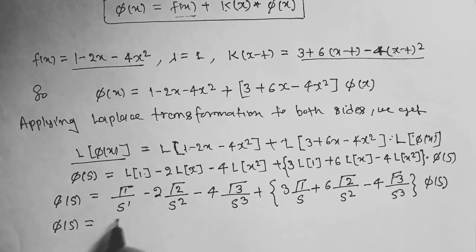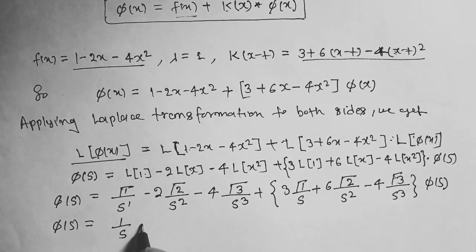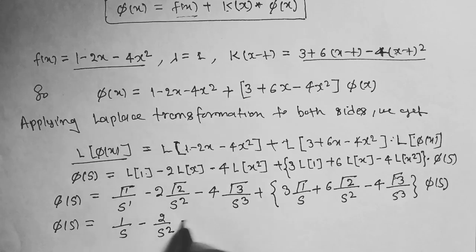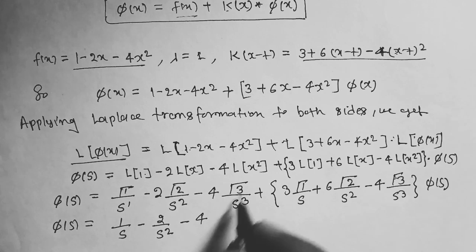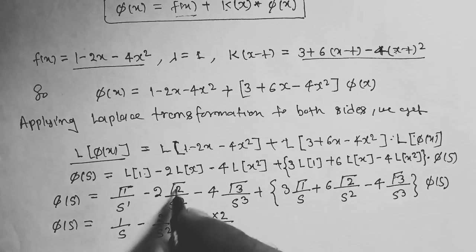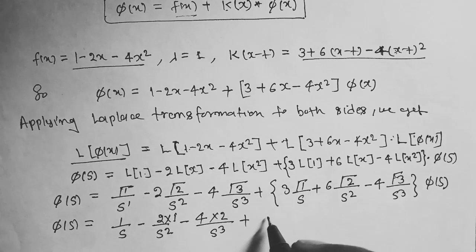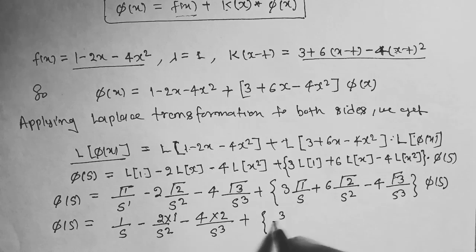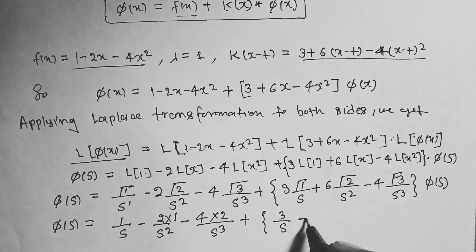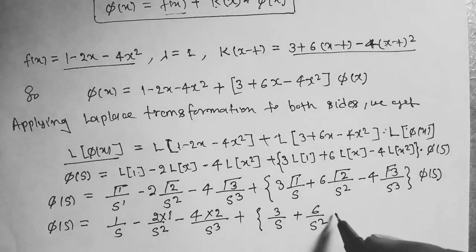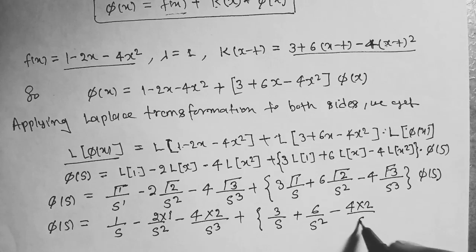Collecting terms: φ(s) - [3/s + 6/s² - 8/s³]φ(s) = 1/s - 2/s² - 8/s³.